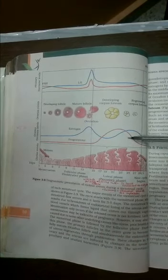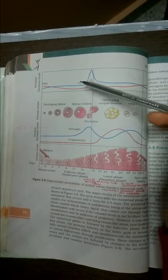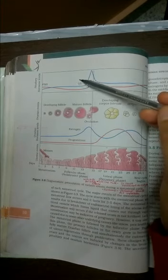So if there is no pregnancy, then what will happen? The level of progesterone starts coming down. The reason is what? The level of LH will start coming down.